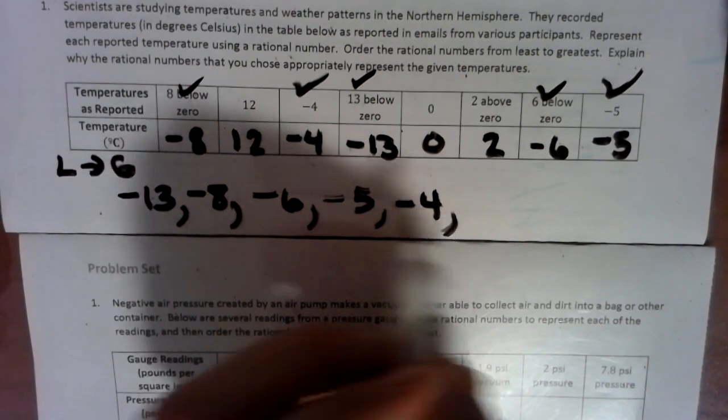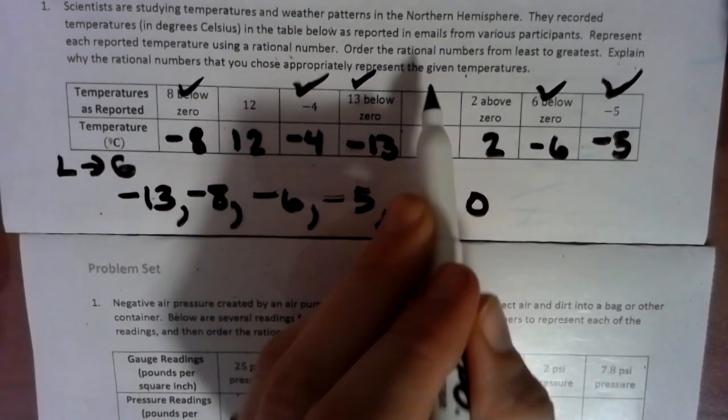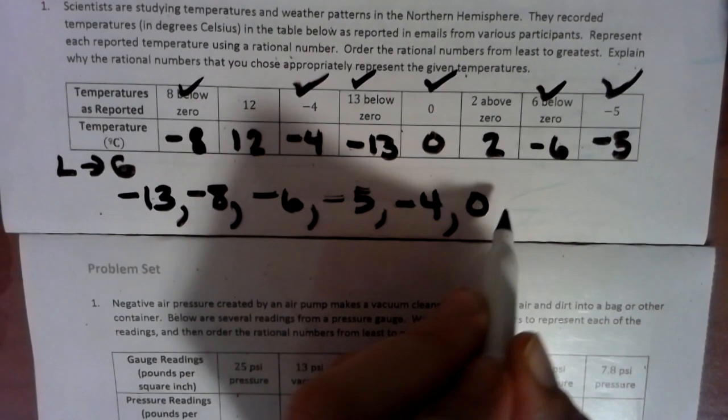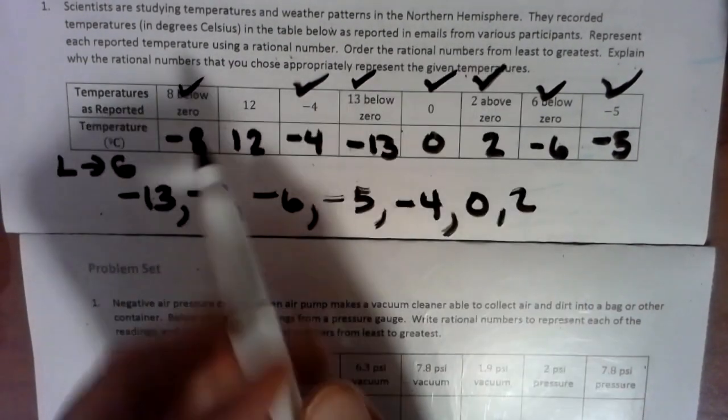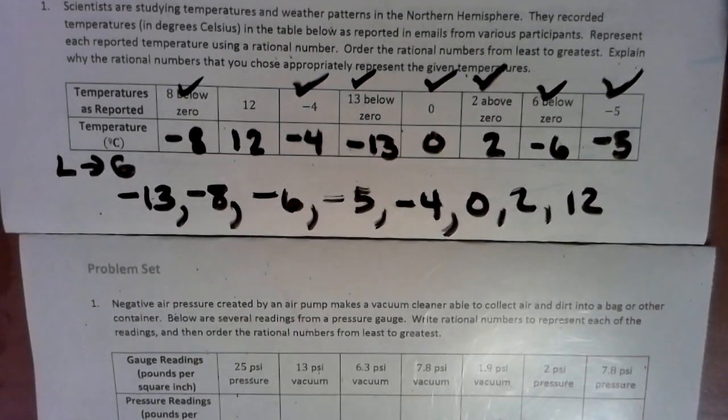So if this were money, which one would be our next worst to have? Obviously having nothing, and then having 2, and then having 12. And these go the same with temps. So now we're going to look at this bottom question.